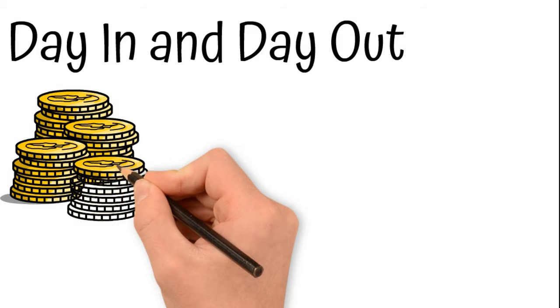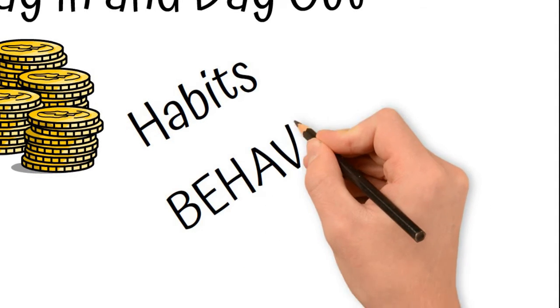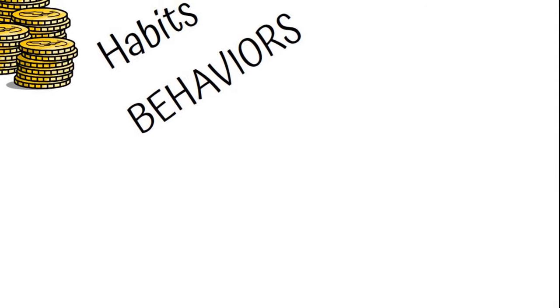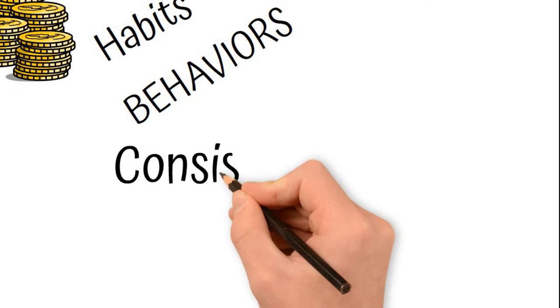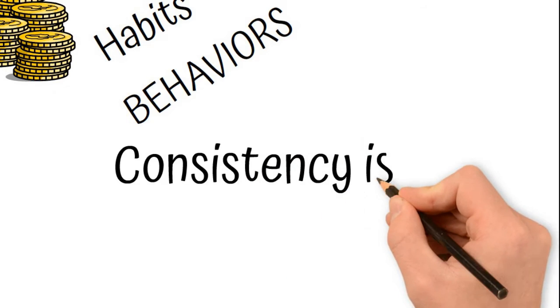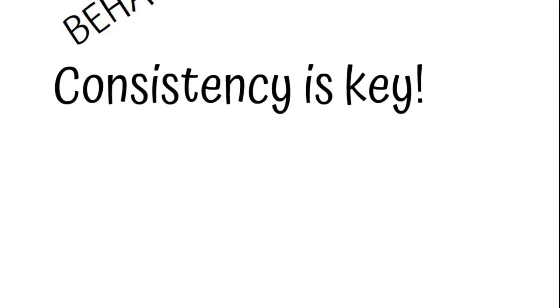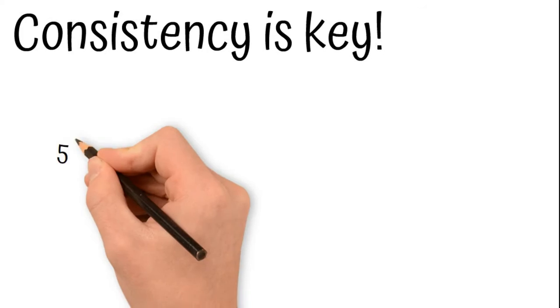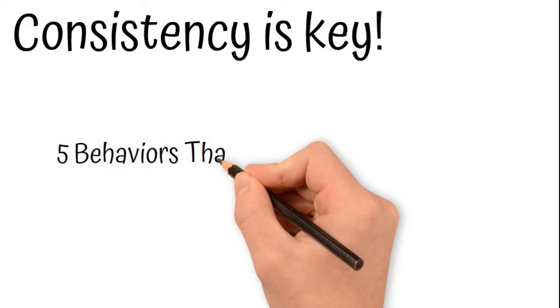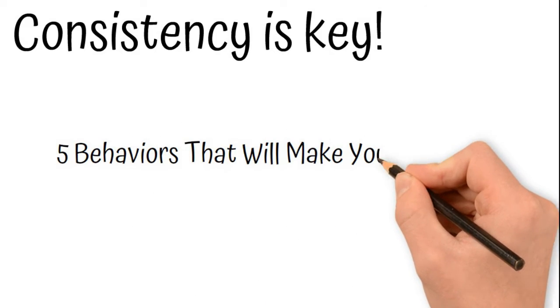Because this is a lifelong process, most of the successful people have developed habits and behaviors that they use, not just every now and then, but that have been consistent throughout their entire lives that have helped them not only reach these levels of success, but to maintain them as well. Today, we're going to go over these five behaviors that will make you successful.